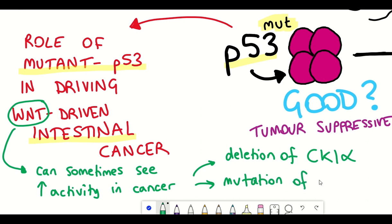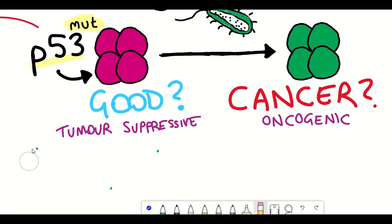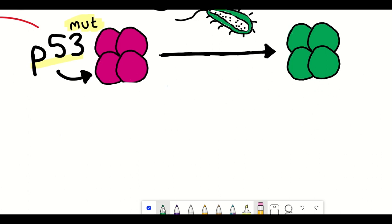Using a mouse model where either of these genes were mutated within the gut, the authors explored the impact of having mutant p53 present as well, to see if it really does drive further tumorigenesis. The really interesting finding they report was that there seemed to be a dichotomous effect of the presence of mutant p53.